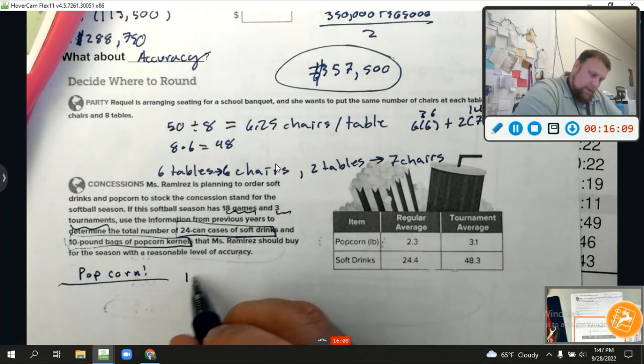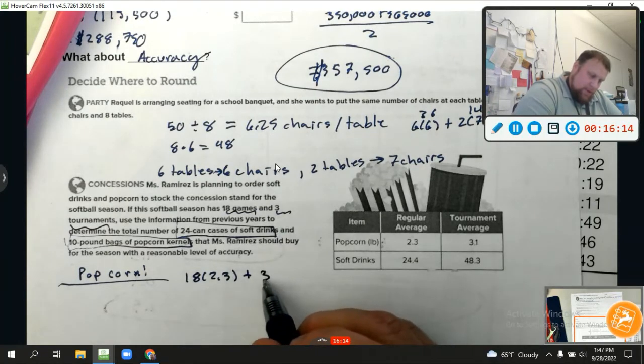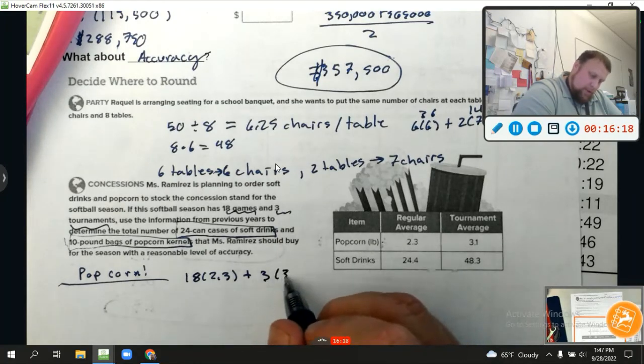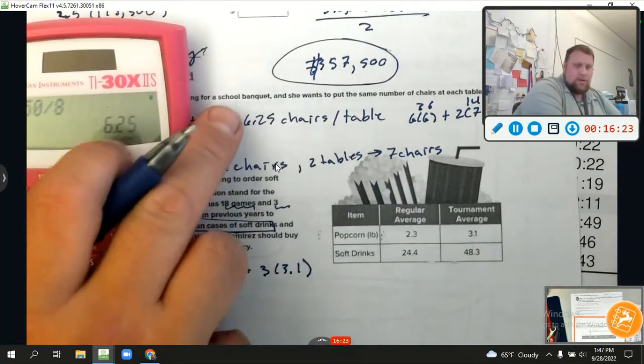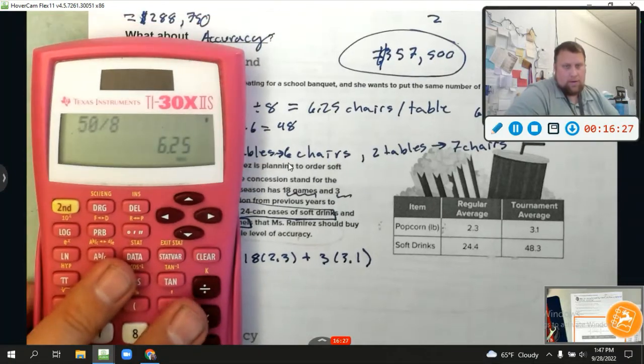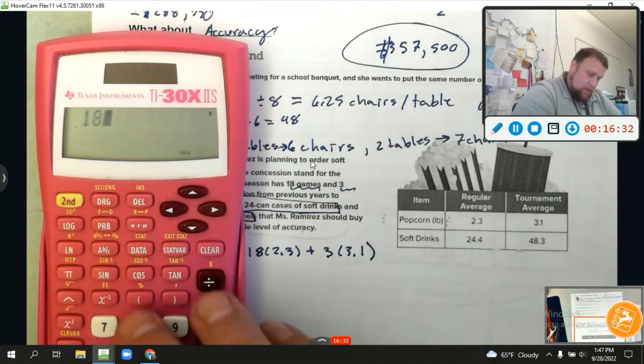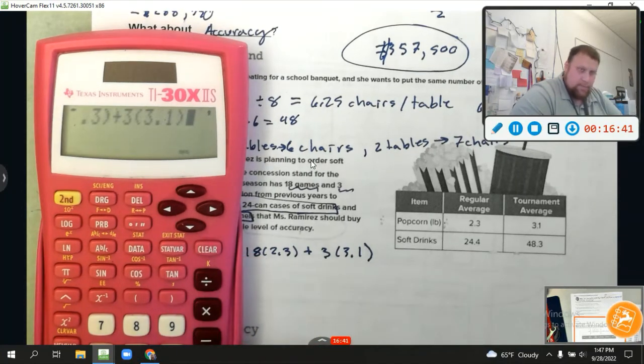Oh, let's find out what that is. So we're going to have 18 times 2.3 plus 3 times 3.1. Oh, you'll want a calculator for this part. That becomes 50.7. So this equals 50.7 pounds of popcorn on average.